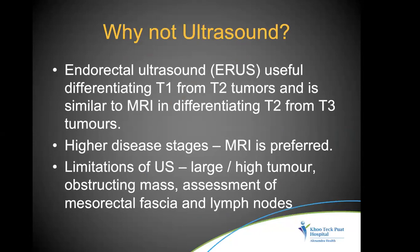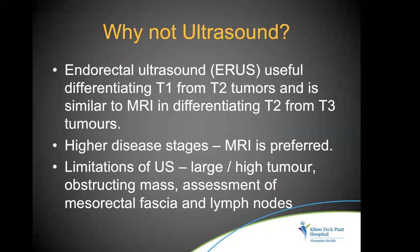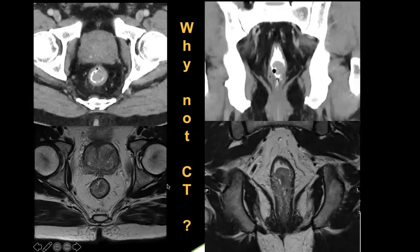Why not use ultrasound? Endorectal ultrasound is good to differentiate T1 from T2 tumors and has similar accuracy in differentiating T2 and T3 tumors, but as disease progresses to higher stages, MRI is preferred. Ultrasound is operator-dependent, uncomfortable, and difficult to perform with large or high tumors. Assessment of the mesorectal fascia and lymph nodes is also not as good with ultrasound compared to MRI.